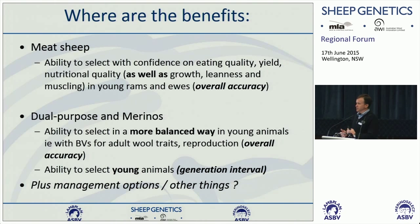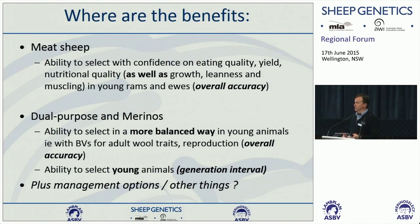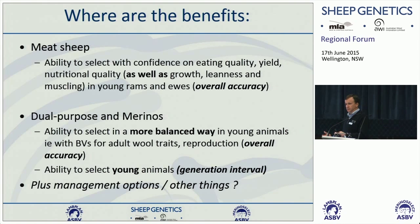Where are the benefits? That depends on what breeding program you're running. For terminal sire breeders, we can already measure growth rates, fat and muscle, birth weight, lambing ease — those sorts of things — on young rams and get breeding values back before they're seven months of age. So the benefit isn't so much in shortening generation interval. The real benefit is being able to identify genetic variation for traits we haven't been able to measure yet, like eating quality and carcass yield traits.